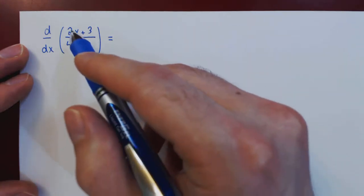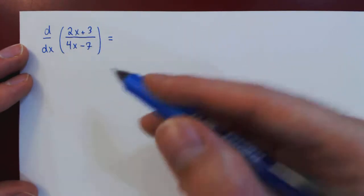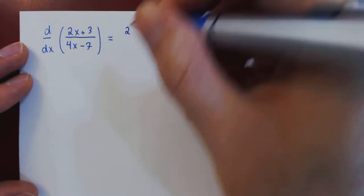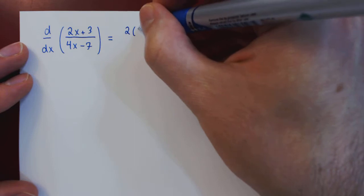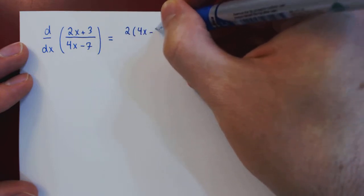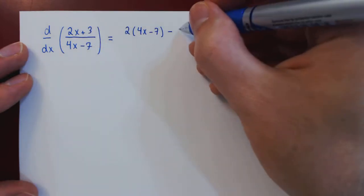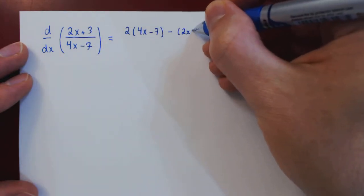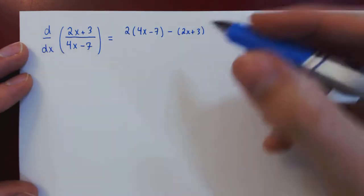If you recall, the quotient rule says first we have the derivative of the numerator, which is simply 2, times the function under the denominator, so we have to open up our brackets. Then minus the function on the numerator times now the derivative of the denominator, which is simply 4.